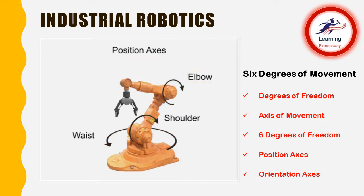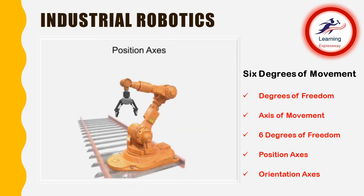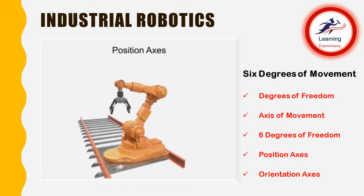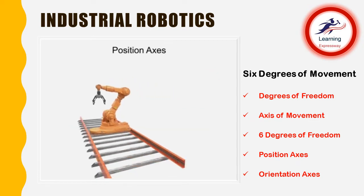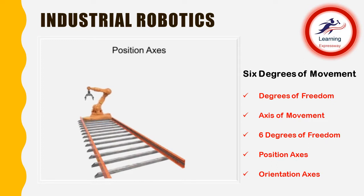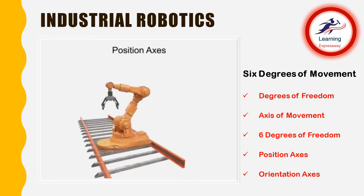Most robots have at least three position axes to help position the tool in the work area. If the robot were to slide along a track, it would have a fourth position axis of linear movement and another degree of freedom.